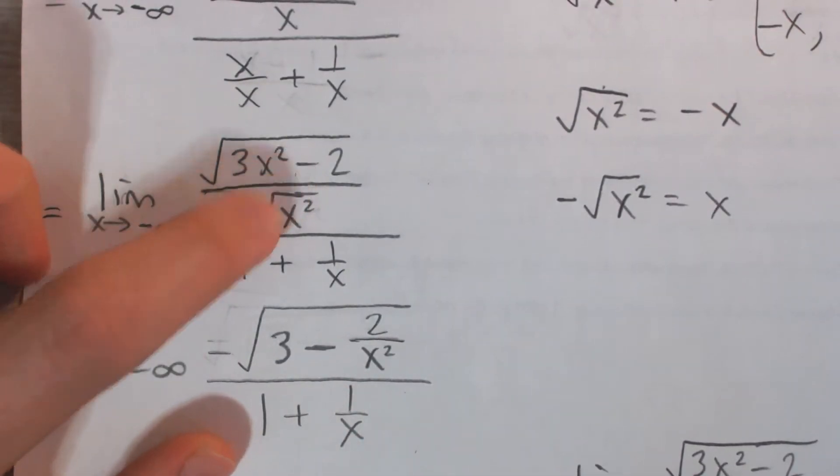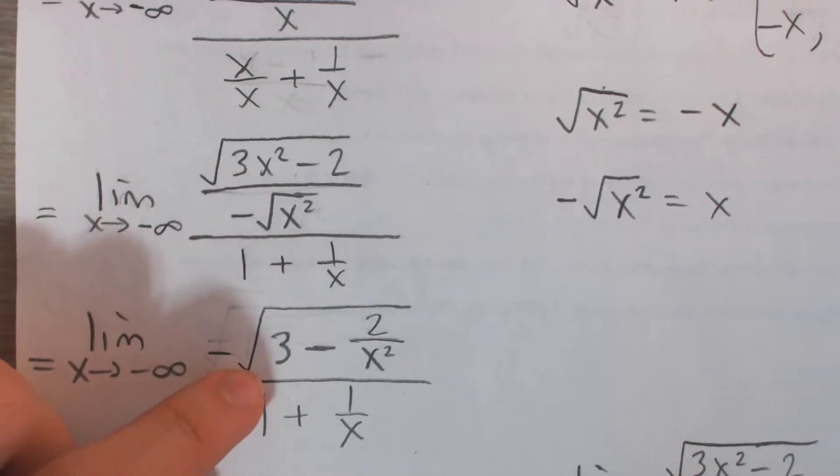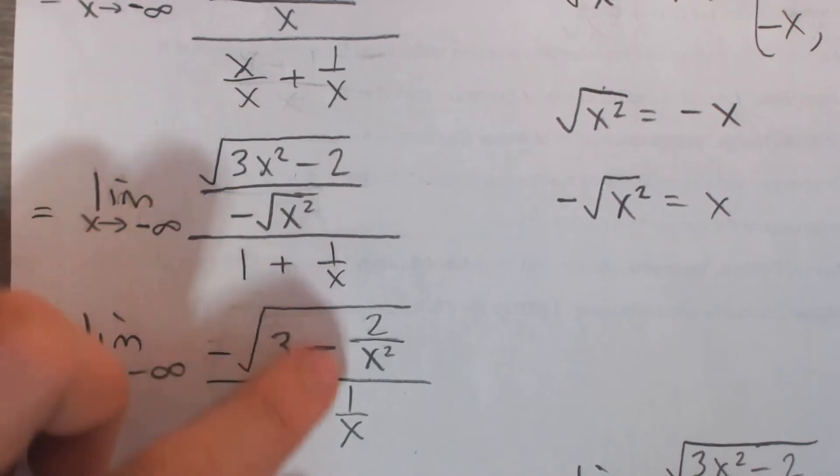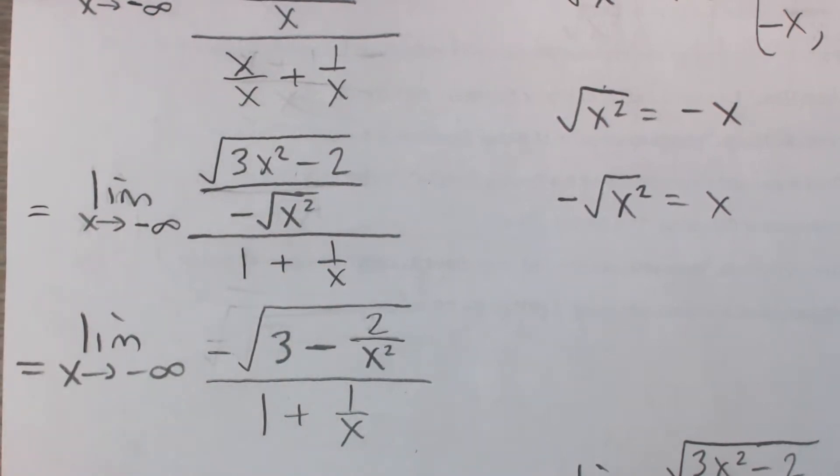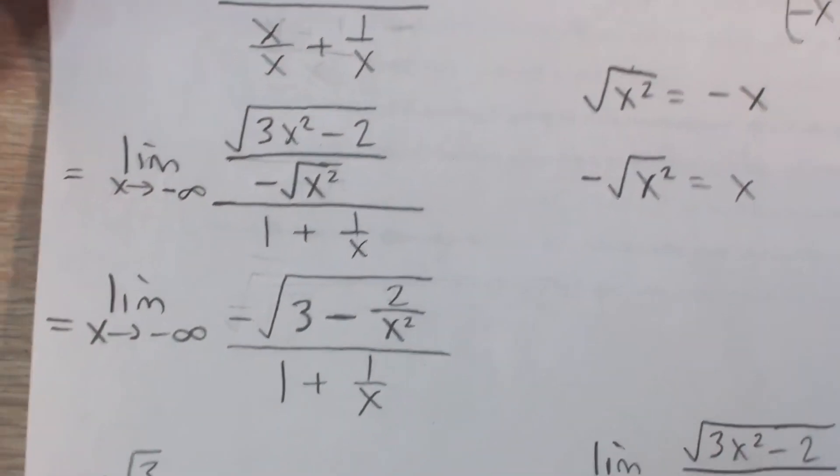And so take a look at what's going to happen. We have 3x squared minus 2 divided by x squared. So in other words, it's 3x squared divided by x squared or 3. And negative 2 divided by x squared or negative 2 over x squared. And so now we have a limit that makes a lot more sense.